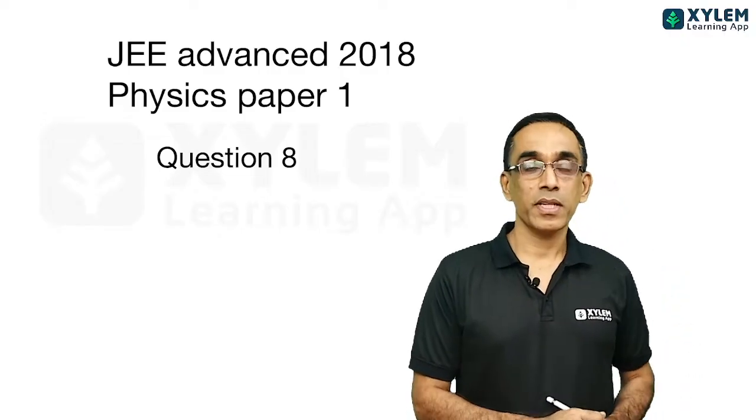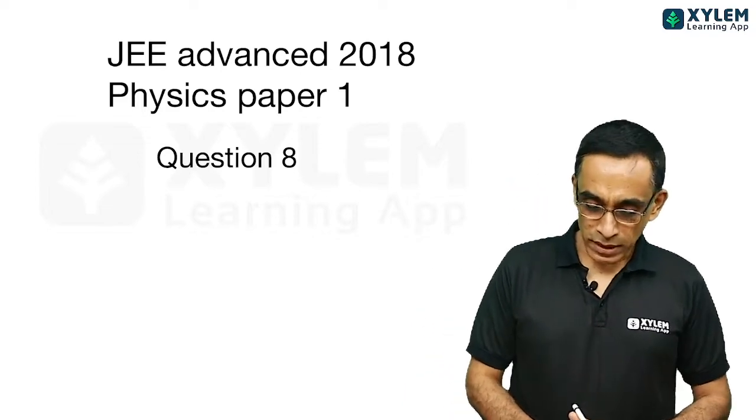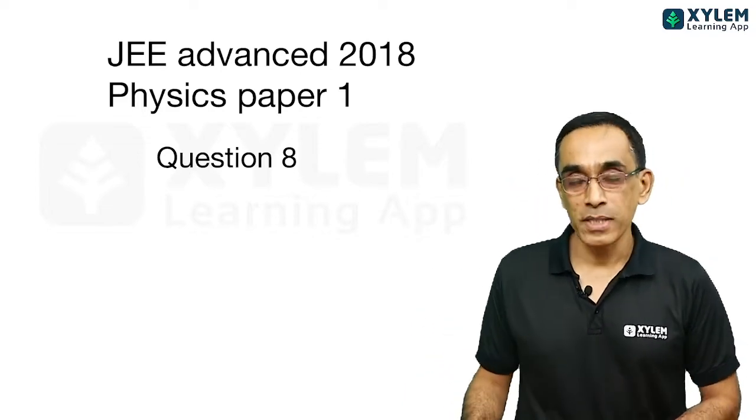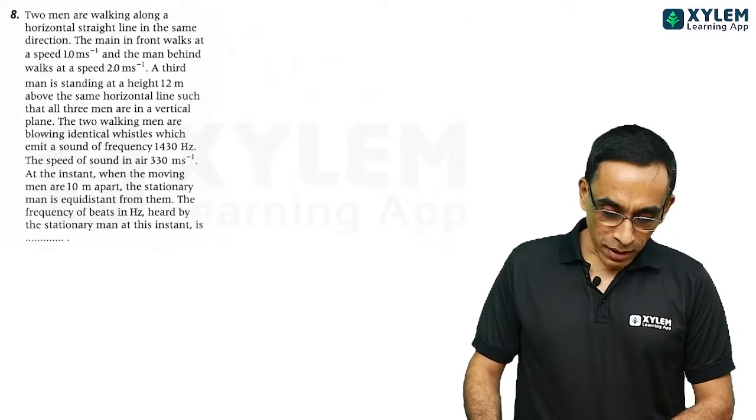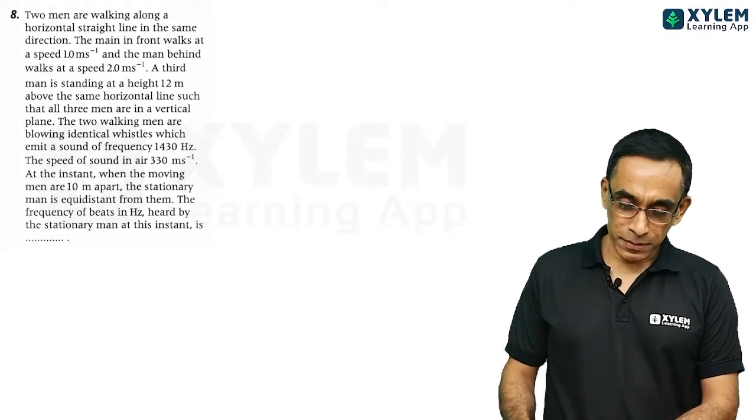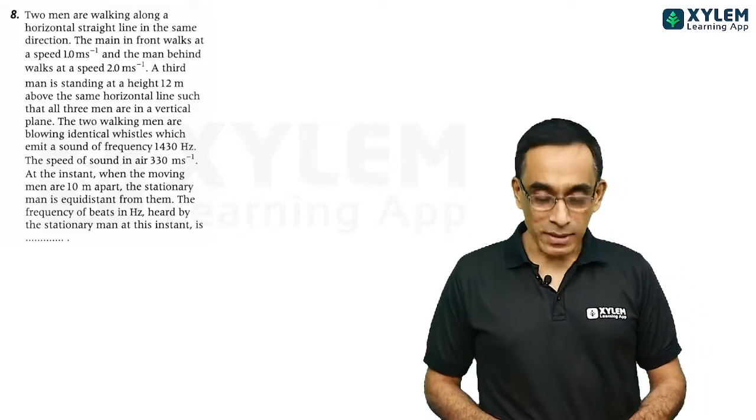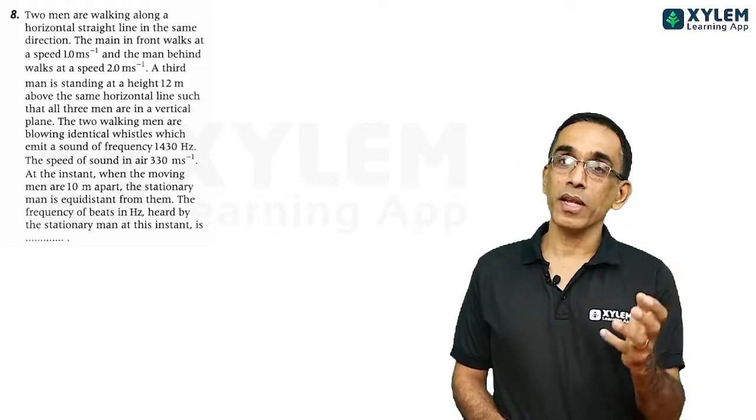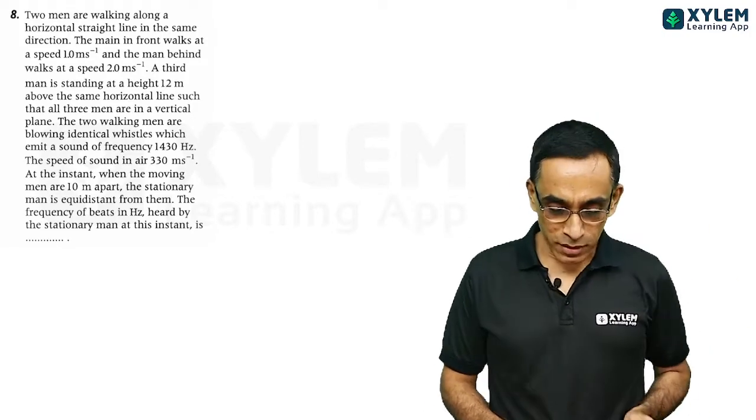Hello guys, this is question number 8 from 2018 physics advance paper 1. And this is about Doppler effect. Doppler effect where the velocity is not parallel to the line joining observer and the source.